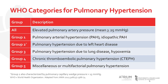The World Health Organization, or WHO, categorizes pulmonary hypertension into five groups, all of which are characterized by an elevation in mean pulmonary artery pressure. However, the underlying pathophysiology for each of these groups is a little bit different. First, group 1 patients are those with pulmonary arterial hypertension, or PAH, which will be the focus of this video.